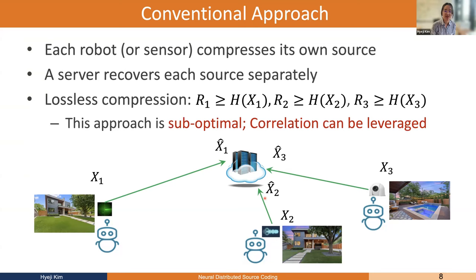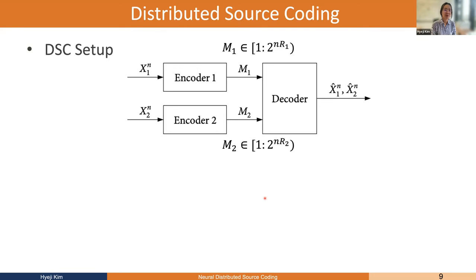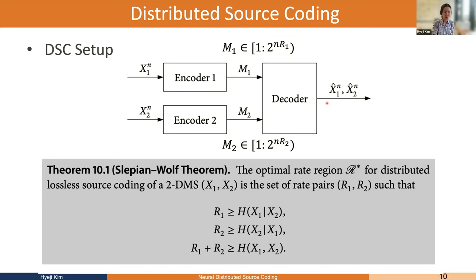The distributed source coding setup considers the setting with multiple encoders and one decoder. With two encoders: encoder one has access to X1, encoder two has access to X2, where X1 and X2 are correlated, and they each do their own compression. The decoder takes both M1 and M2 and aims to recover both sources. The celebrated Slepian-Wolf result — now textbook material — shows we can achieve lossless compression as long as the sum rate is greater than or equal to the joint entropy of X1 and X2, the same rate needed with a single joint encoder.